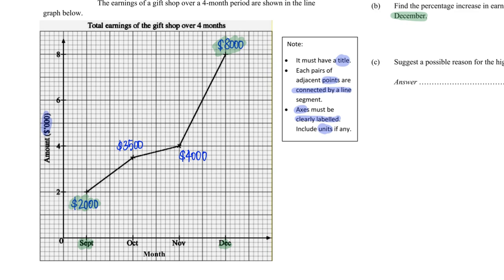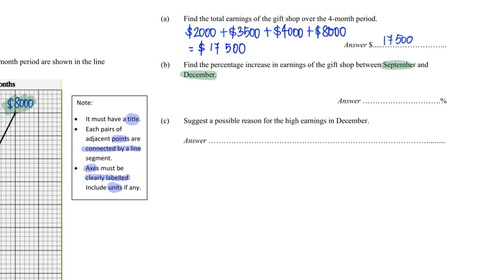So we want to find the percentage increase. The increase will be eight thousand minus two thousand. So this will be eight thousand dollars minus two thousand dollars, and because you want to find the percentage increase, divide by the original two thousand times one hundred percent. This gives me a value of three hundred percent.